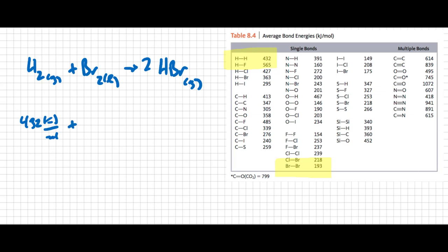Plus 193 kilojoules per mole, and that's one mole of bromine, so I'm okay there. The amount of energy that I'm putting in is positive 625 kilojoules per mole of each of my reactants. But that's the energy being put in.